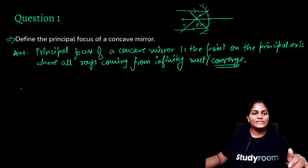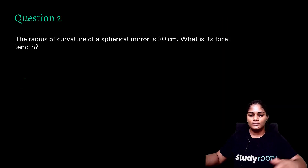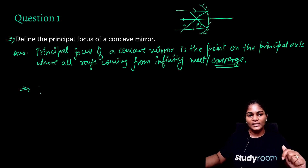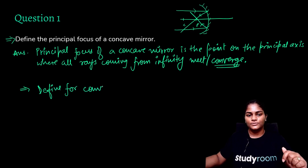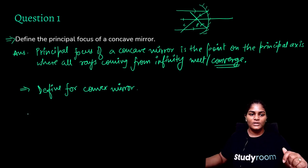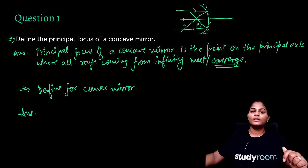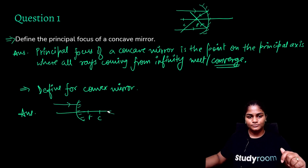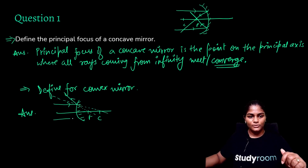Now although the question doesn't say it, what if I add one part to the question: define the principal focus for a convex mirror also? Again, I don't want you to unnecessarily remember details — build it from what you know. For a convex mirror, think of rays coming from infinity. The ray comes in, you draw the normal through the center of curvature, and you draw the reflected ray passing through the focus. Similarly, one more ray coming from infinity seems to pass through the focus and reflect.